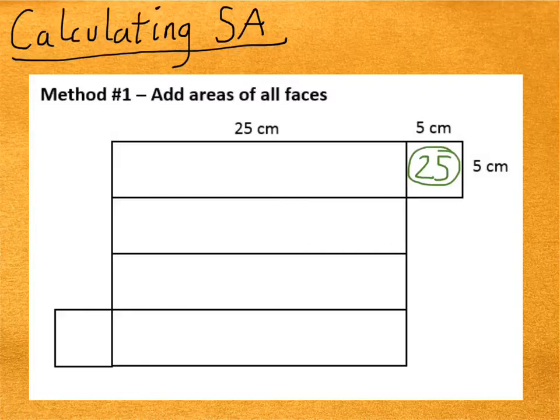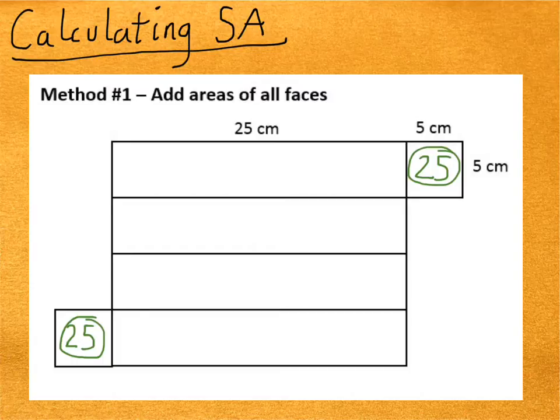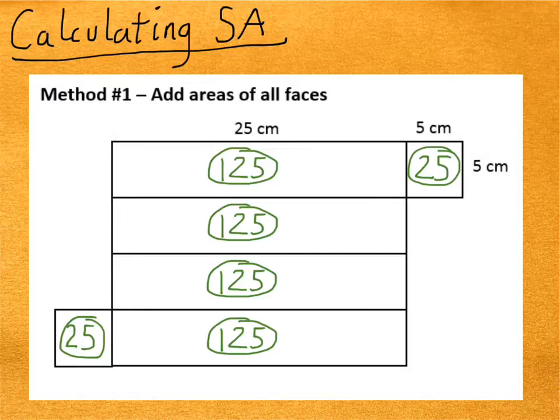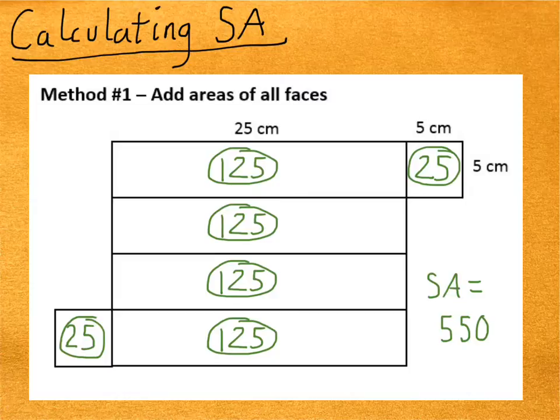The area of the square there is 25 square centimeters because its base and height are both 5. The other square, which has to be congruent to it because it's on the opposite side of the prism, has an area also of 25. Then, what about the rectangles? Well, those have dimensions 25 by 5, so the area of each one of those would be 125. To get the total surface area, I just need to add it all up. So, that would be 550. And don't forget your units, centimeters squared. That would be the total surface area because we added the area of all of the faces.